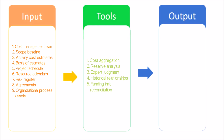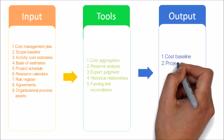The tools and techniques used in this process include: Cost Aggregation, where cost estimates are aggregated by work packages in accordance with the WBS; Reserve Analysis, which can establish both the contingency reserves and the management reserves for the project; Expert Judgment, guided by experience in an application area, knowledge area, discipline, industry, or similar project, which aids in determining the budget; Historical Relationships, involving the use of project characteristics to develop mathematical models to predict total project costs; and Funding Limit Reconciliation, where the expenditure of funds should be reconciled with any funding limits on the commitment of funds for the project.